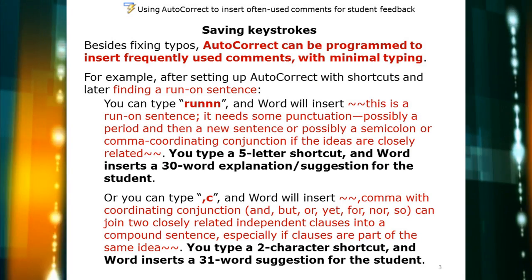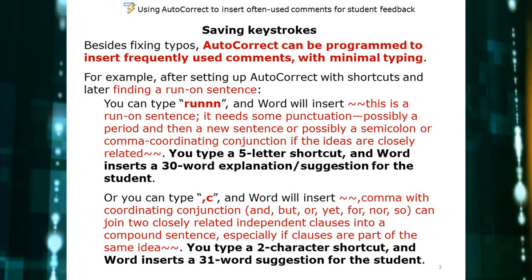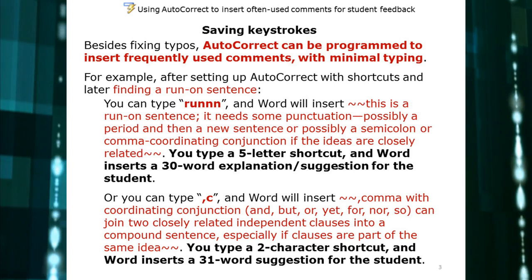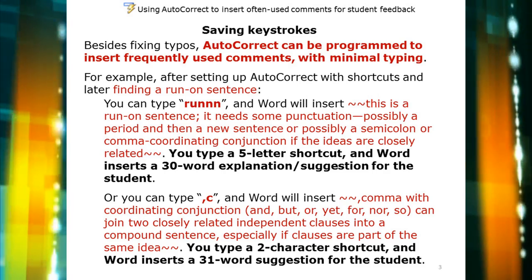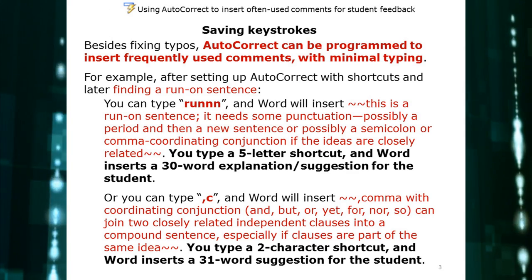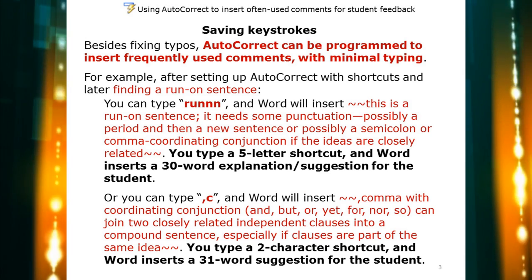The major advantage is that you can save keystrokes. If I run across a run-on sentence in a student essay, which is a common occurrence, on my system I type R-U-N-N-N and Word automatically inserts a 30-word explanation of what a run-on sentence is — just five characters typed in seconds. Similarly, I can type comma-C and auto-correct inserts 'comma with a coordinating conjunction connects two independent clauses' and so forth — a two-character shortcut that inserts a 31-word explanation.